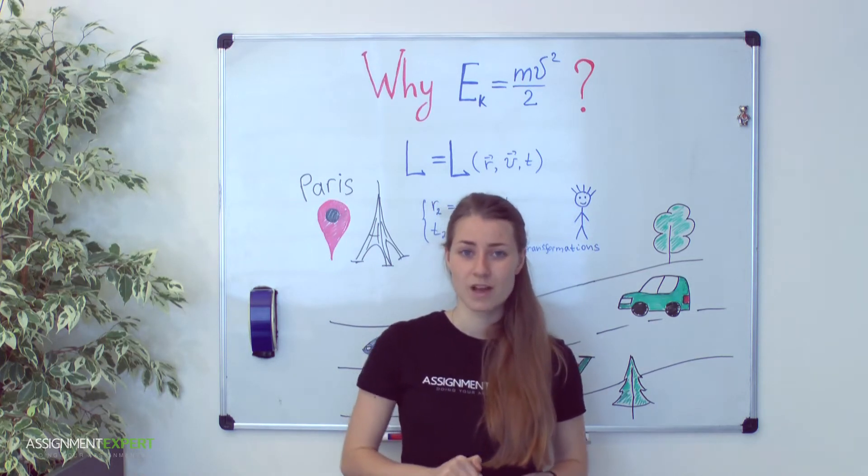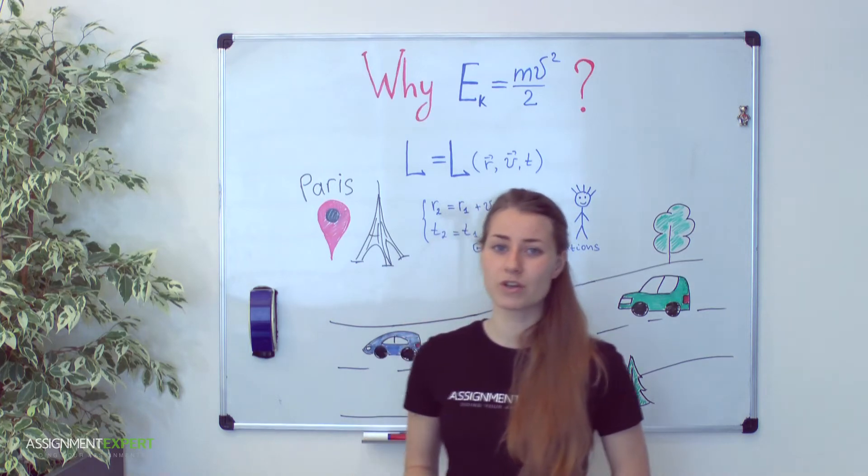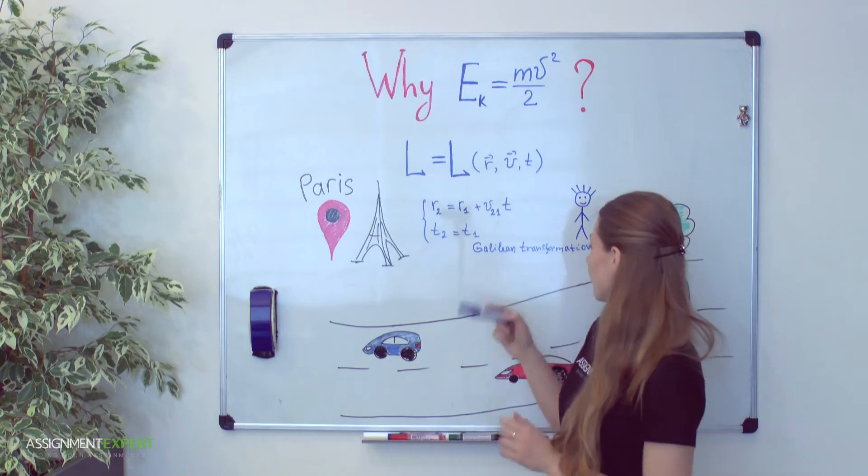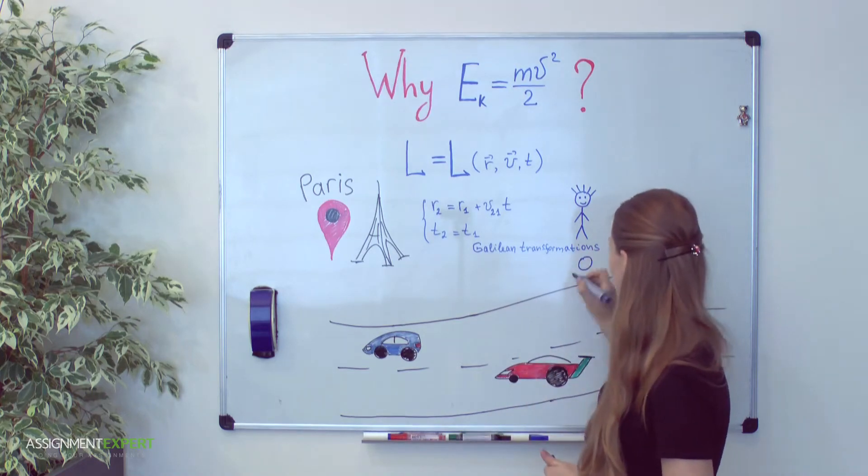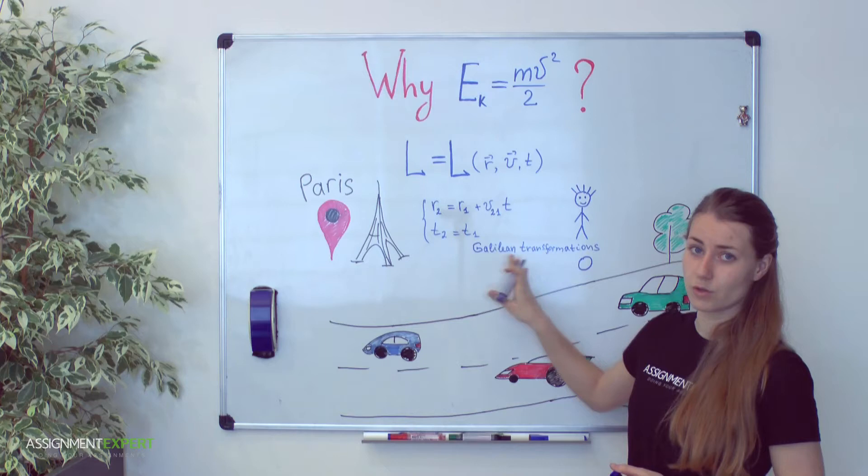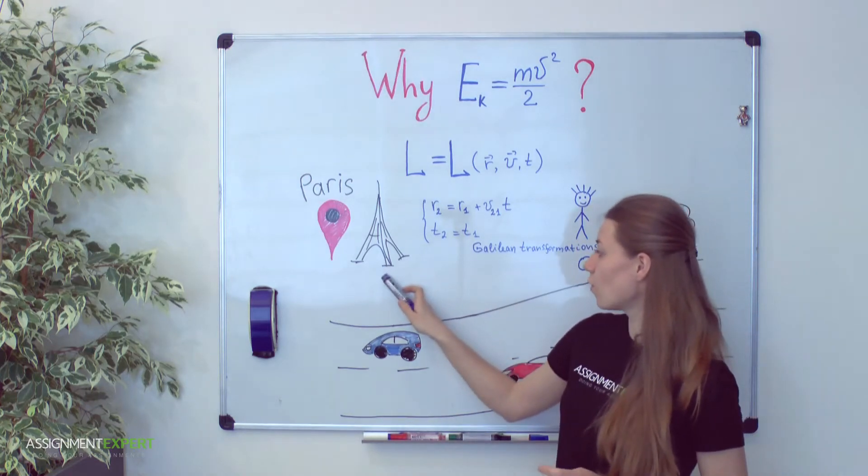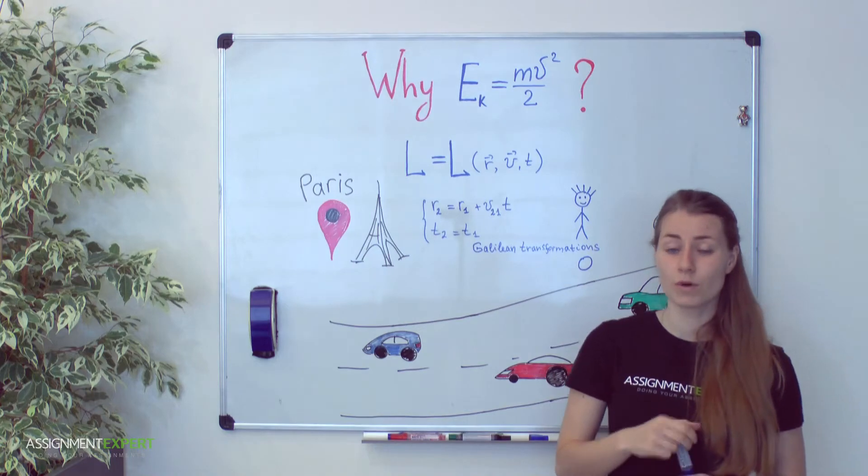Let's suppose that I want to measure a distance from here to Paris. This guy will be our origin of coordinates and therefore all the measurements will be done with regard to him. But in general the choice of origin of coordinates depends on what you want to measure.